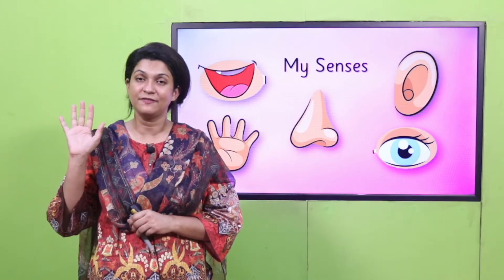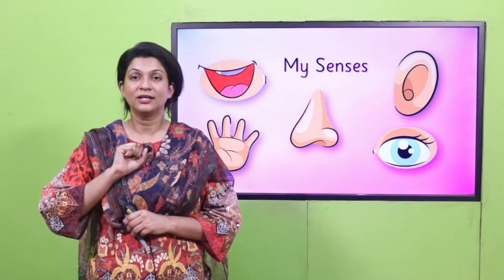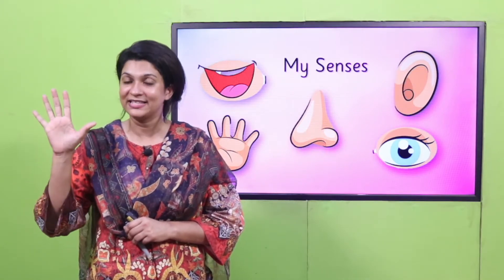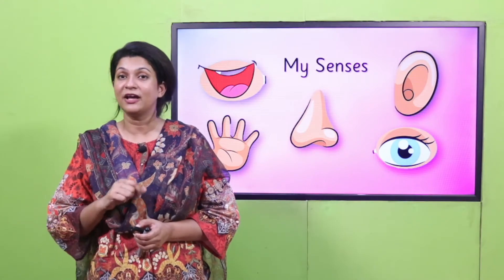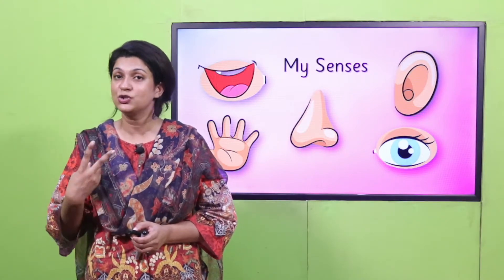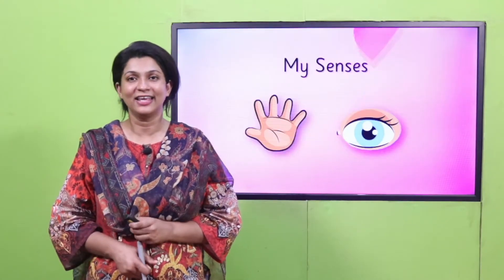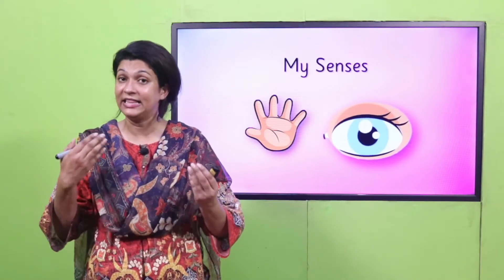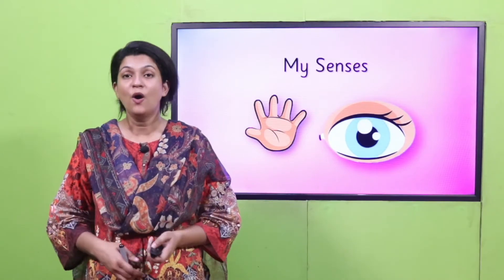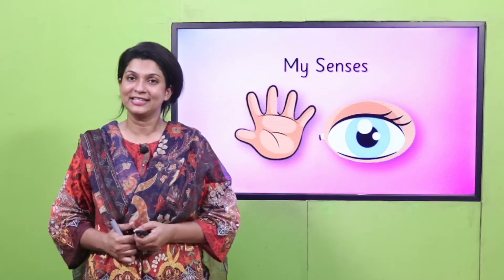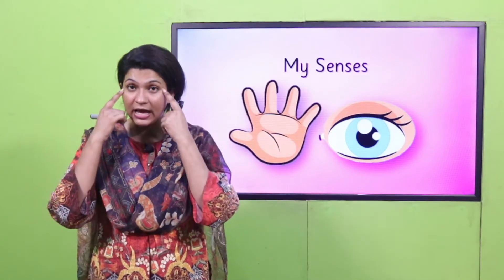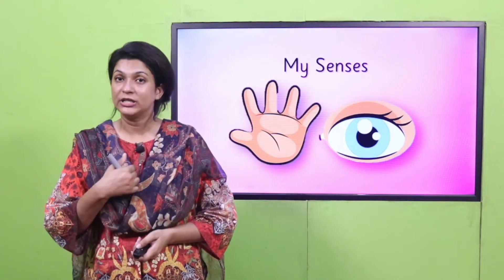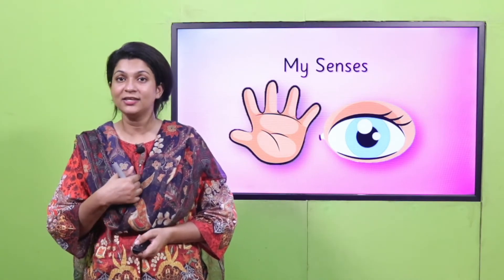So let's start today's fun with your senses. Allah Ta'ala ne humein 5 senses diye hain — five senses. Today we are going to talk about two of those five senses. They are sight and touch — sight is connected with eyes and touch is connected with hands, which can be seen and felt.